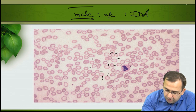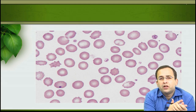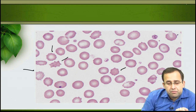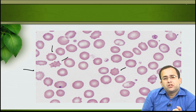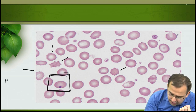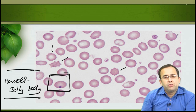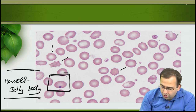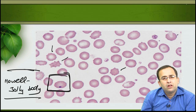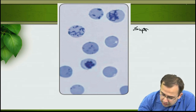Acanthocytes (spur cells) show spicules equally spaced — this is an artifactual change. The diagnostic finding of a Howell-Jolly body is a small inclusion in the RBC. Using a supra-vital stain (new methylene blue), reticulocytes appear as RBCs with a blue dot — this stain is used to count reticulocytes.